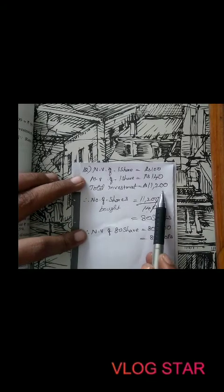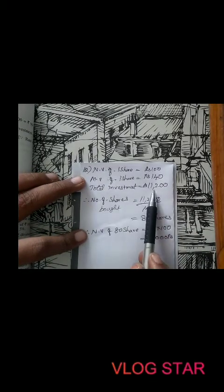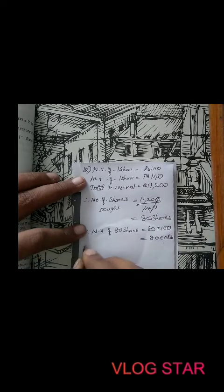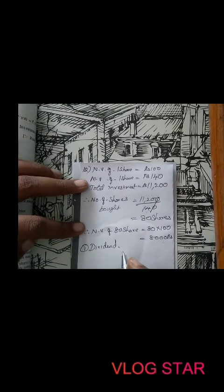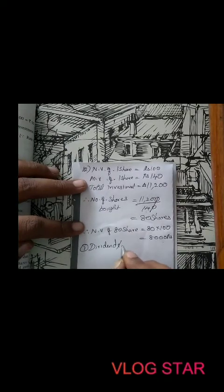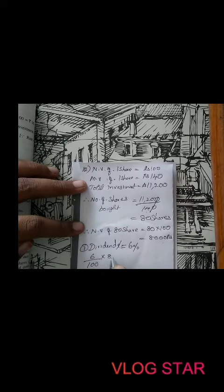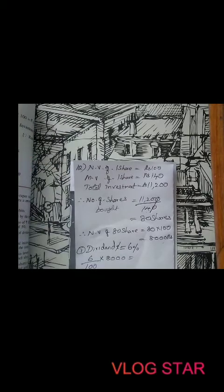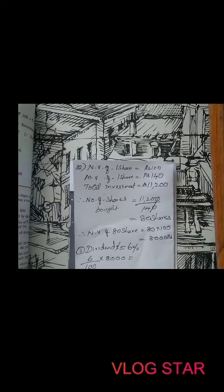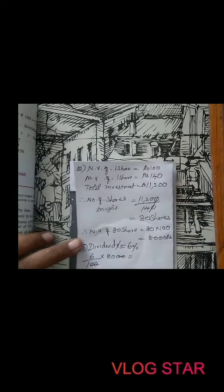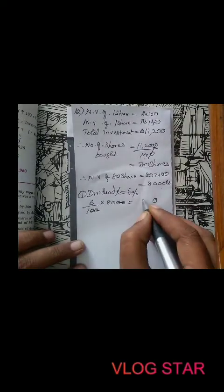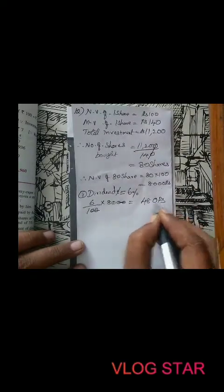Market value is 11,200 because he invested 11,200 for 80 shares. Now we have to find the dividend. Dividend percentage is 6%, that is 6 by 100 of the nominal value. Dividend is always calculated on nominal value — 6% of 8,000 rupees. Cancelling two zeros gives us 6 times 8 equals 48, so dividend is 480 rupees.